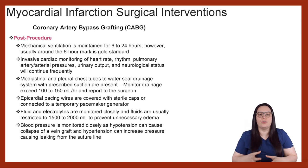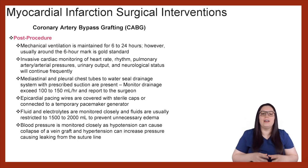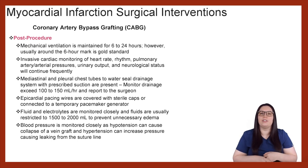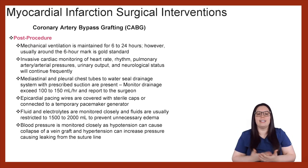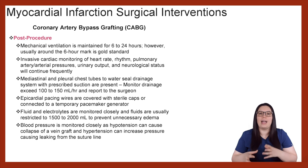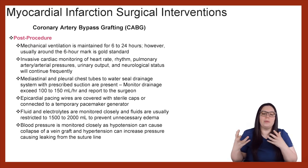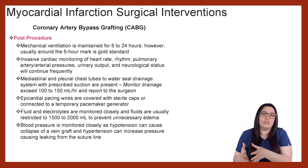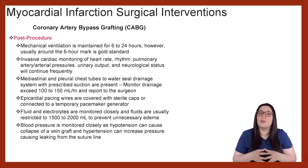Post-procedurally for our CABG patients: mechanical ventilation is typically maintained six to 24 hours after surgery; however, it is usually discontinued around the six-hour mark as that's the gold standard — we really don't want it in there longer than six hours. Invasive cardiac monitoring of heart rate, rhythm, pulmonary artery, and arterial pressures will take place. We monitor urinary output and neurological status frequently. We will have mediastinal and pleural chest tubes to water seal drainage, or prescribed to suction if necessary. If drainage exceeds 100 to 150 mLs per hour, we need to report that to the surgeon, as the patient may need to go back to the OR to address where the bleeding is taking place.